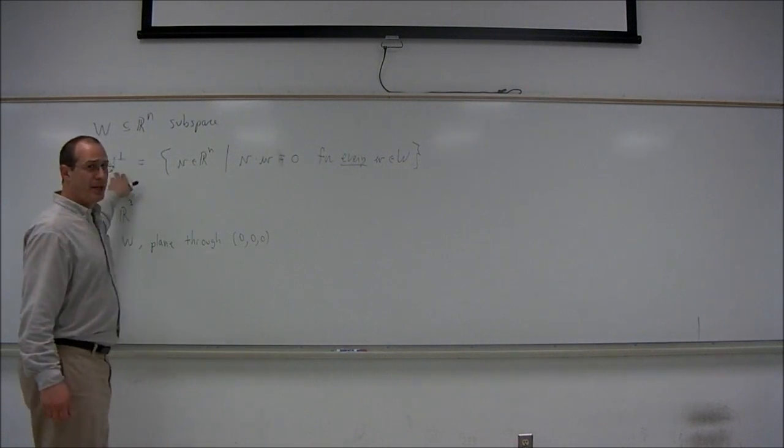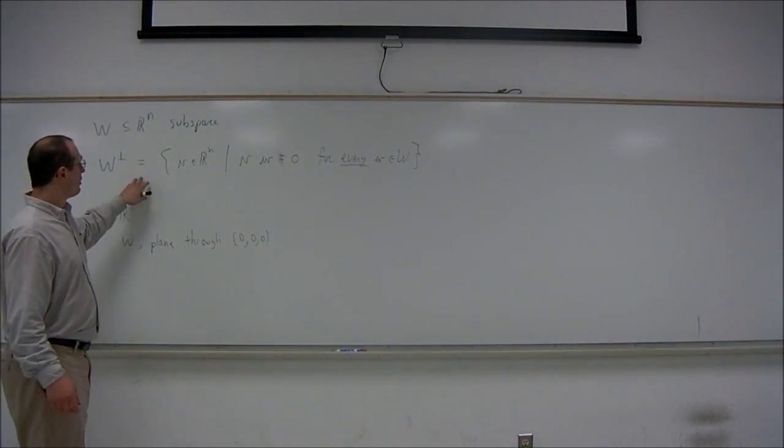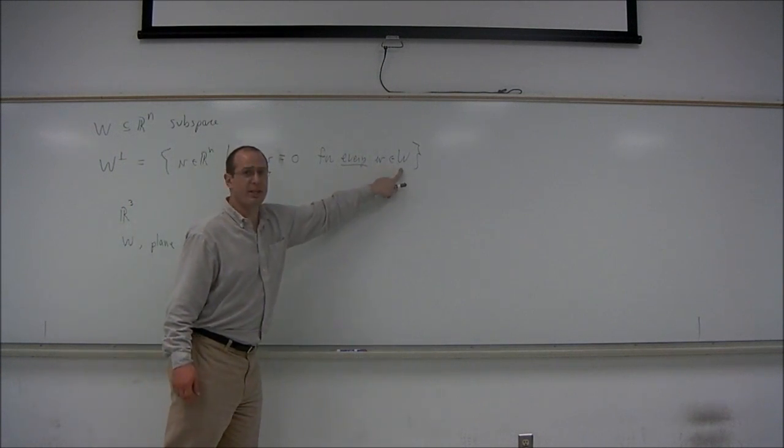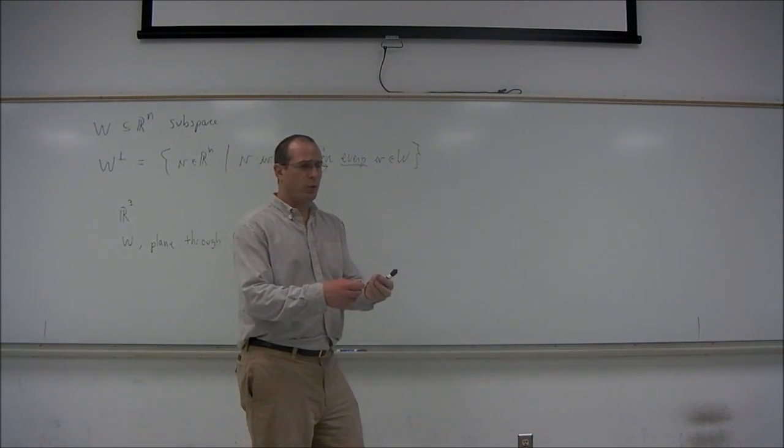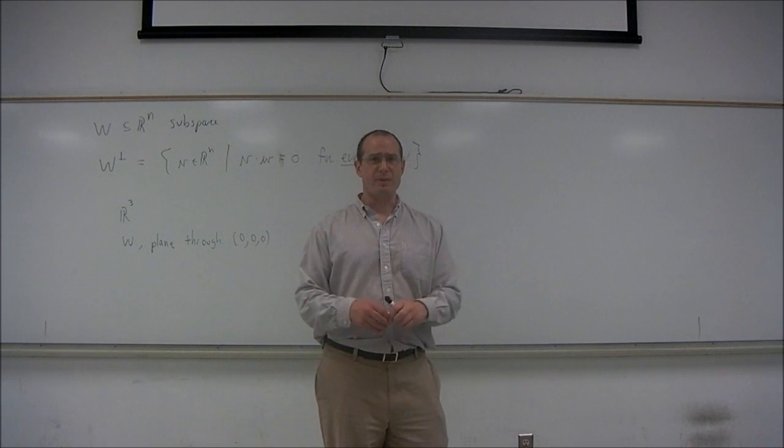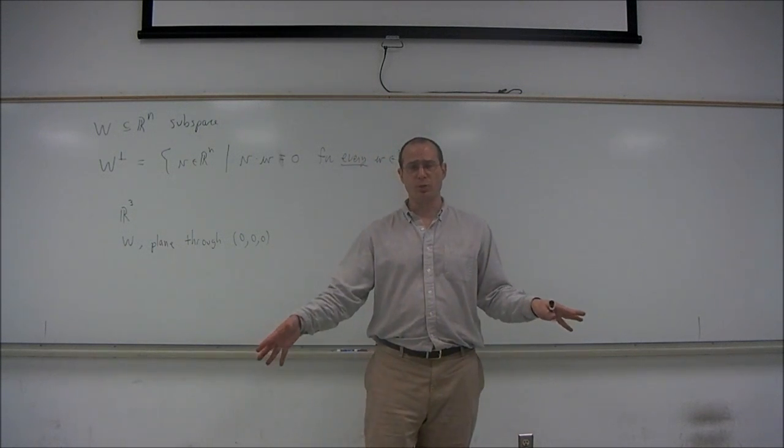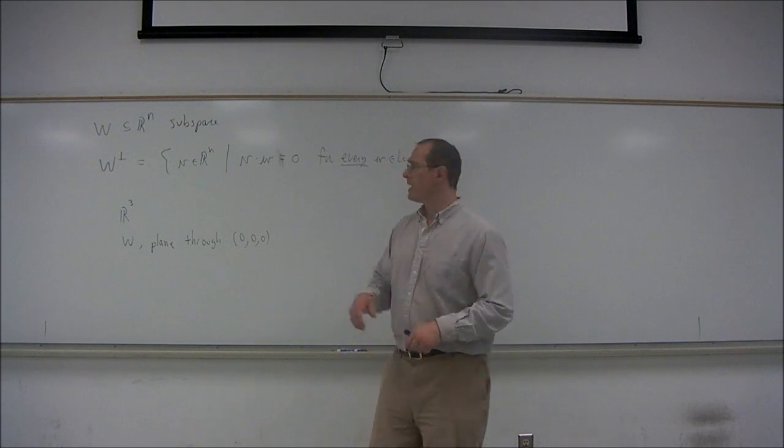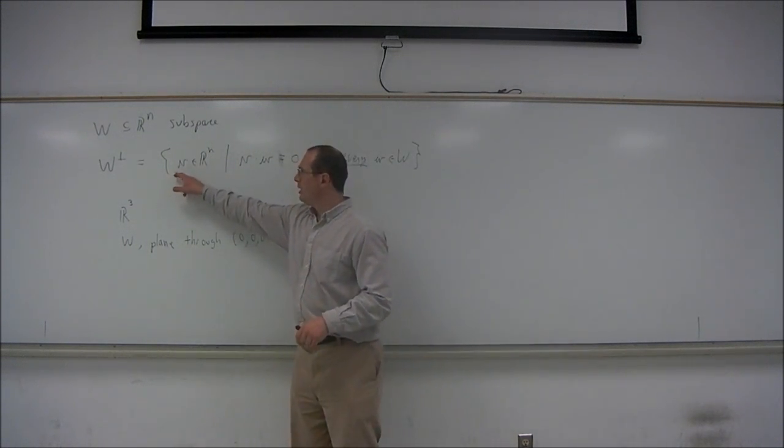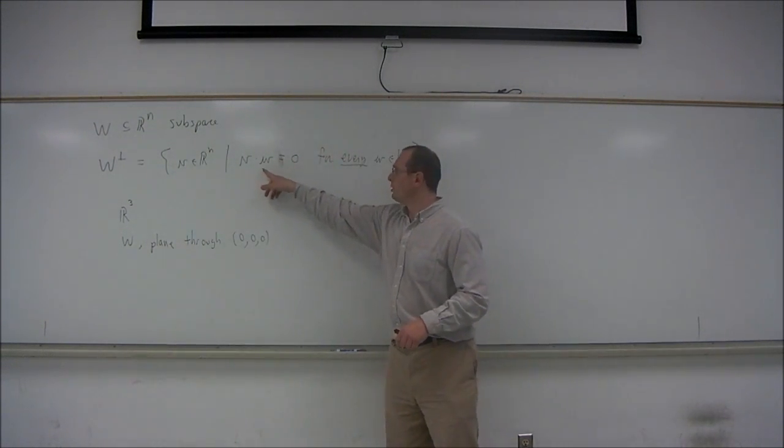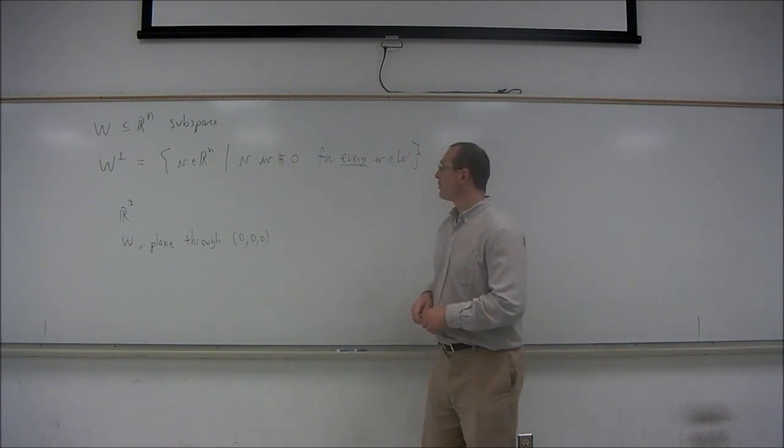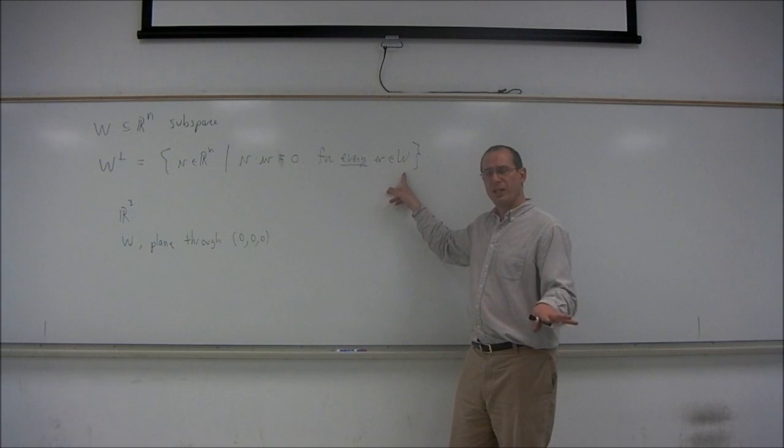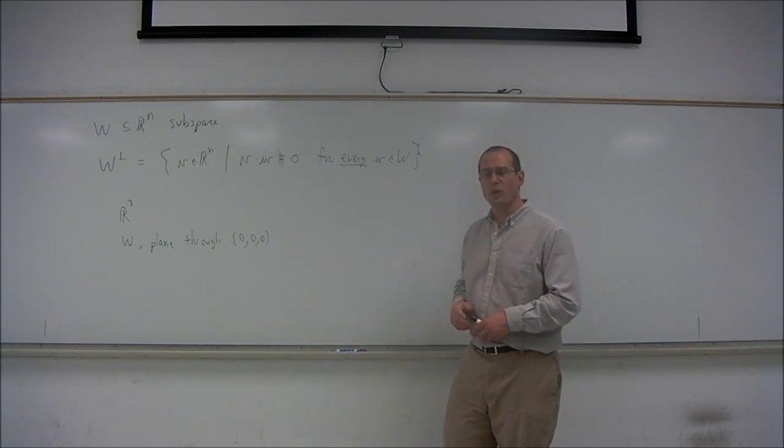Then the orthogonal complement to that plane would be all vectors which are perpendicular to each and every vector in the floor. In the floor, there are many vectors emanating from the point you choose as the origin, and you would like a collection of vectors V which are orthogonal—the dot product is zero—to each and every one of those vectors in the floor.